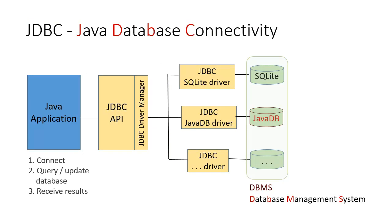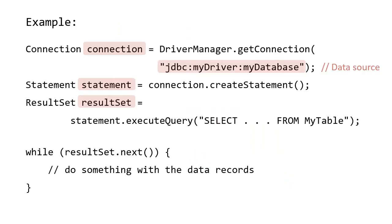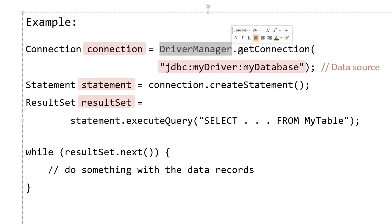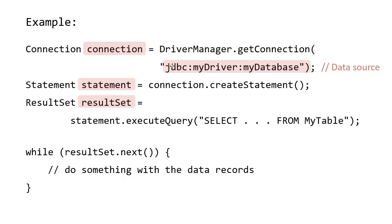I am looking at the bigger picture, and this time I am going to focus on the Java application. When we write a Java application that works with a database, we need to connect to the database. Here is an example of how this could look. We start by creating a connection — you can see we get a connection from a class called DriverManager, and we pass to our connection the database connection URL. You can see the JDBC protocol specification followed by the database name.